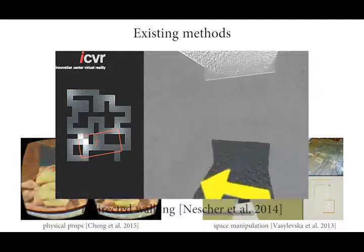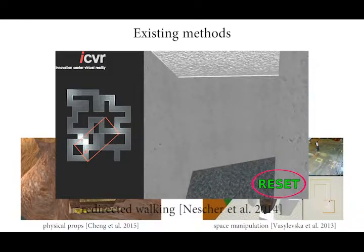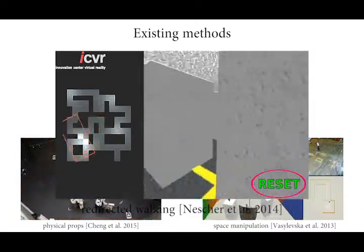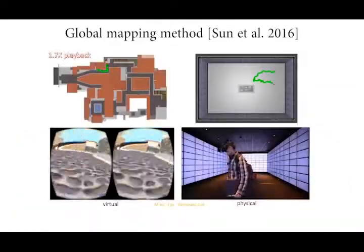However, the redirected walking techniques suffer from the problem of interrupting the user with reset modes. Recently, Sun et al. proposed a warped space method to map virtual scenes onto real workspaces.